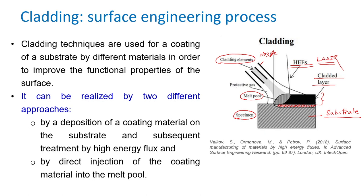This is the key difference between laser surface cladding and laser surface alloying. In alloying, the entire molten material forms a different combination of substrate and deposition material. However, in cladding, mixing occurs only at the interface between the substrate and deposition material. We want the surface to have the material properties of the cladded material, while the substrate material retains its own properties.